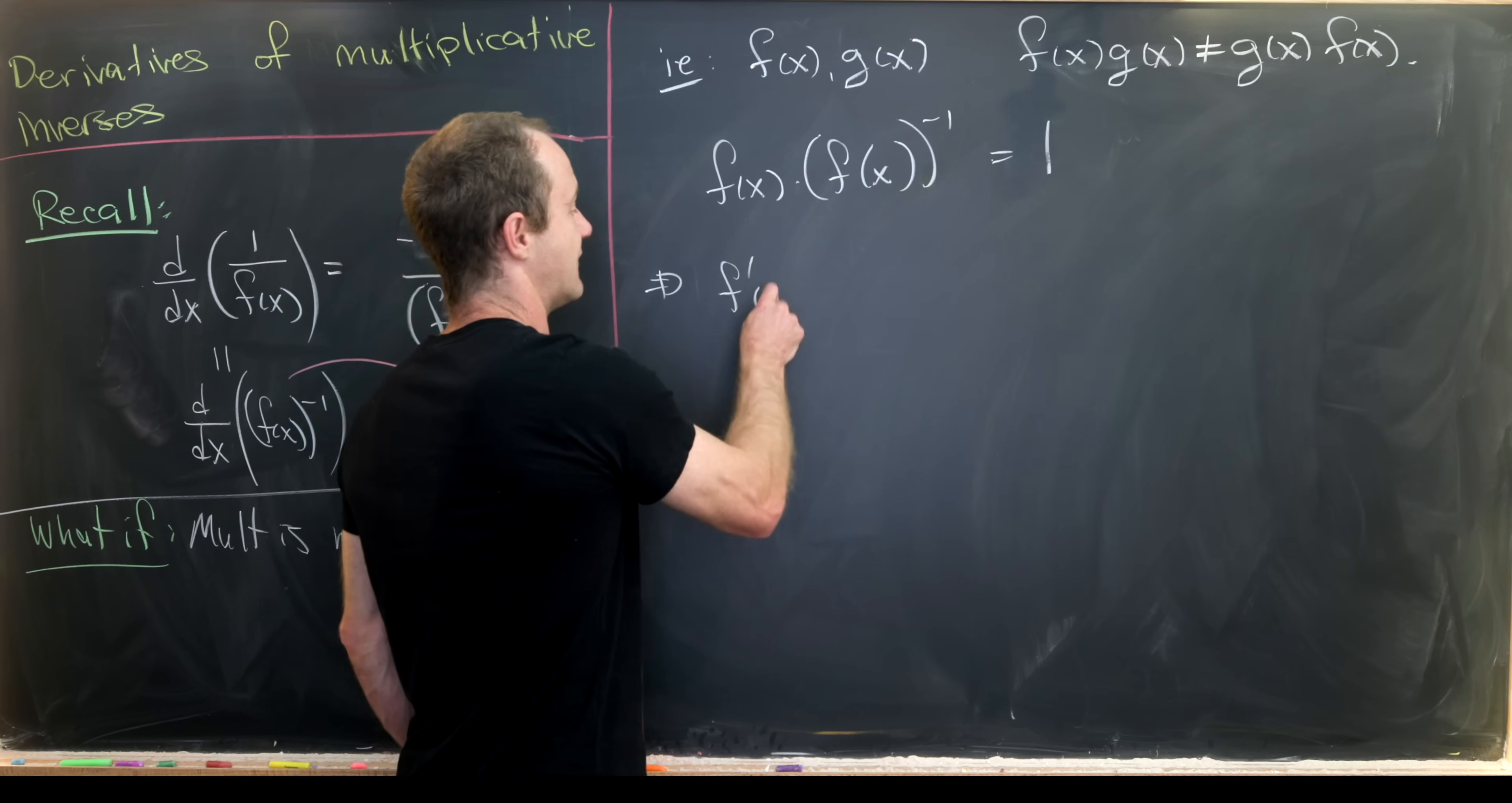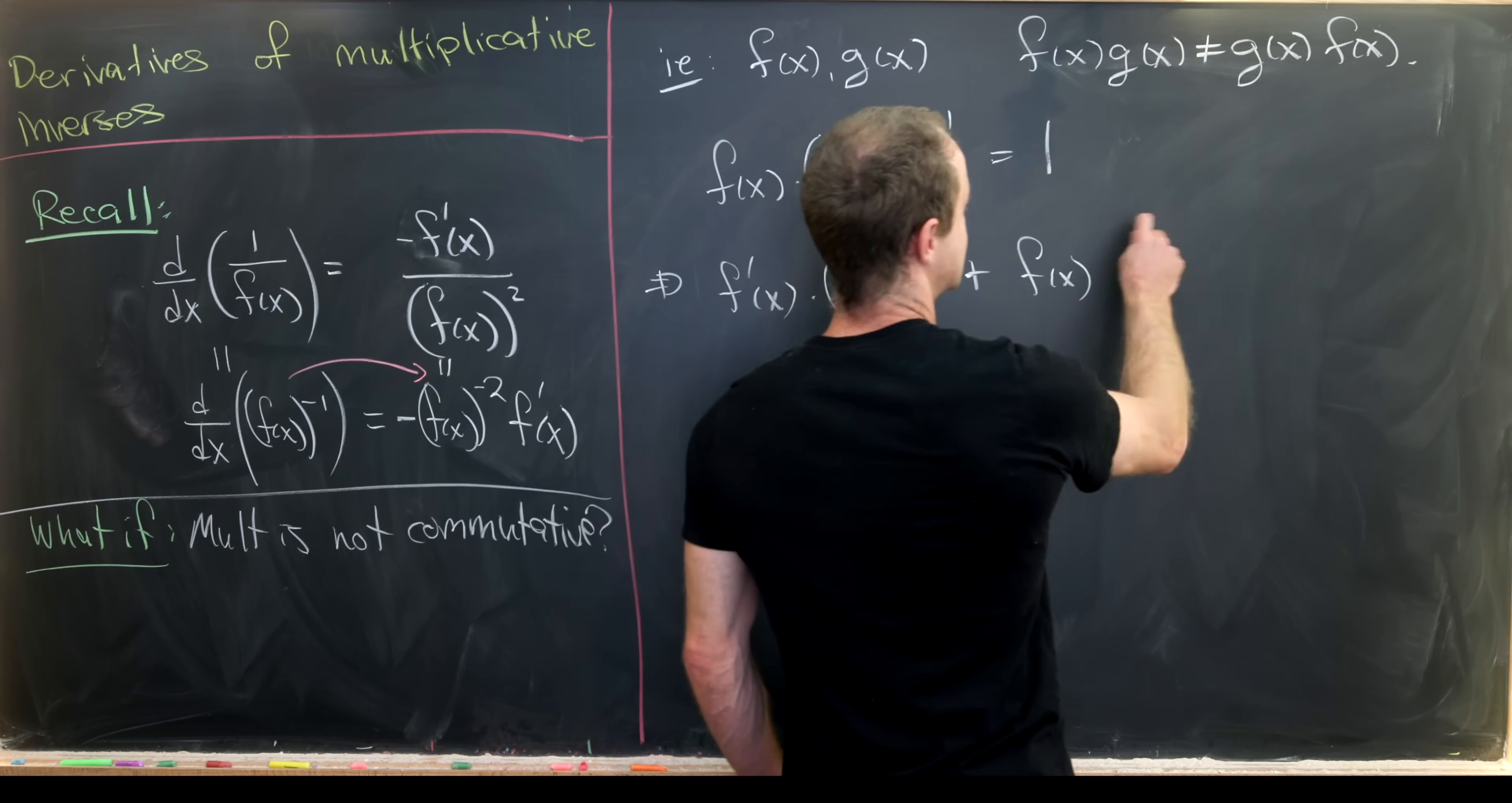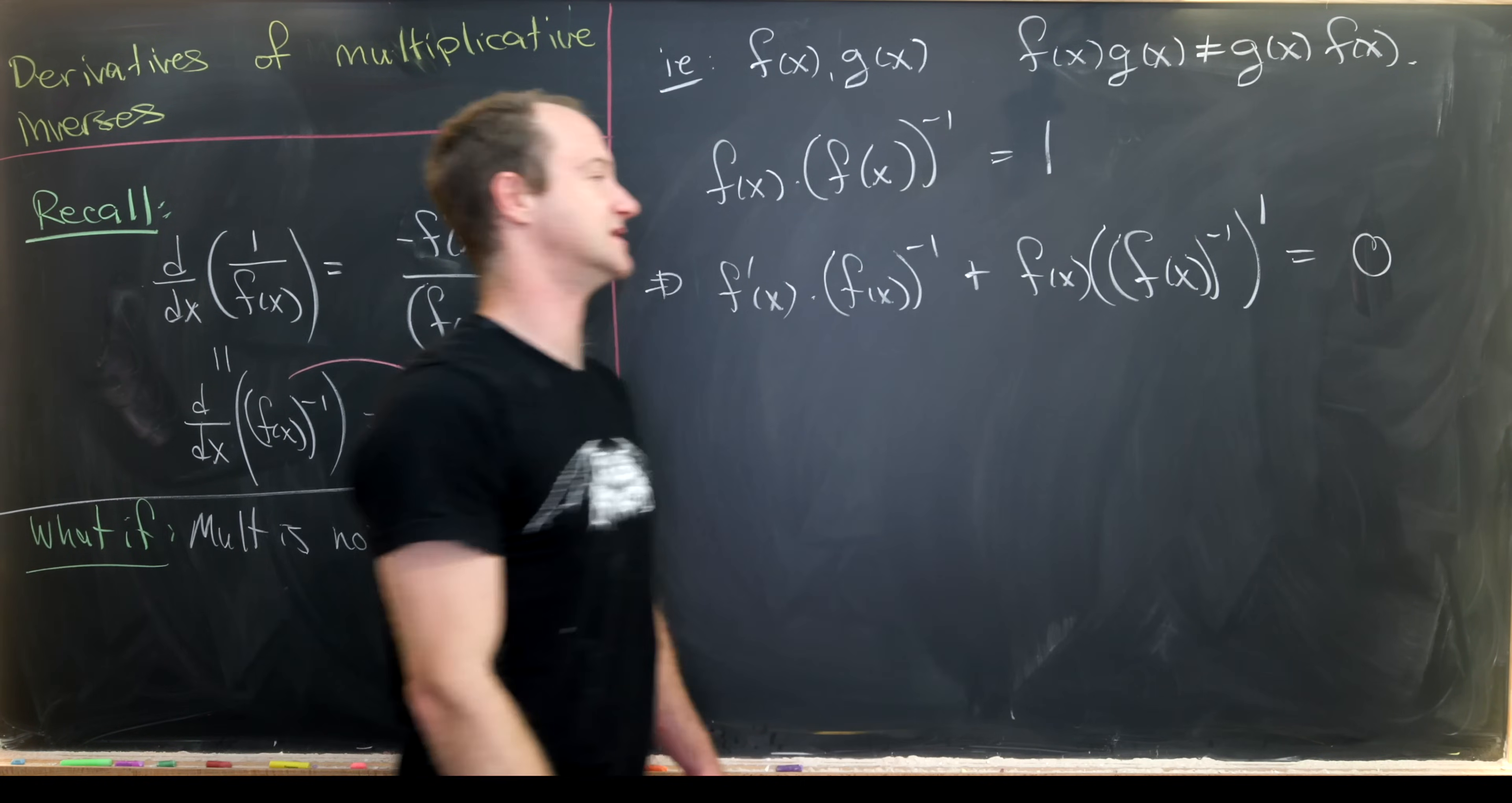We would have f'(x) times f(x) inverse and then plus f(x) times f(x) inverse prime, so that would be the derivative of the inverse function, equals the derivative of 1, which is 0.